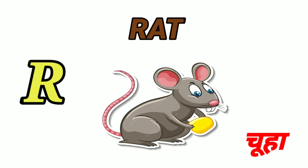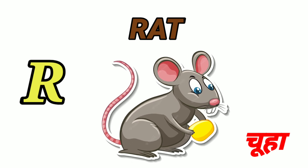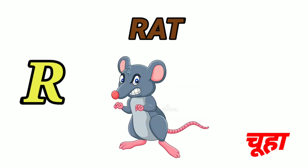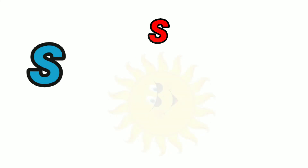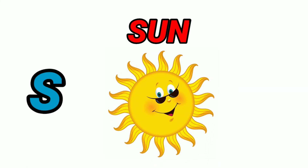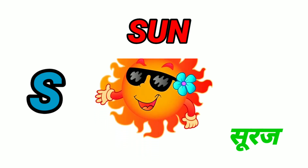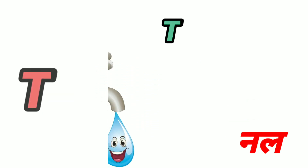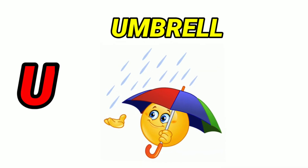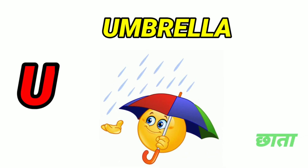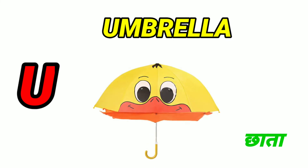R for Rat. Rat means Chuha. S for Sun. Sun means Suraj. T for Tap. Tap means Nal. U for Umbrella. Umbrella means Chhata.